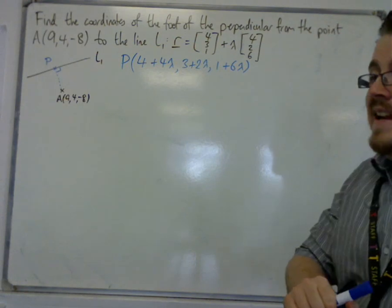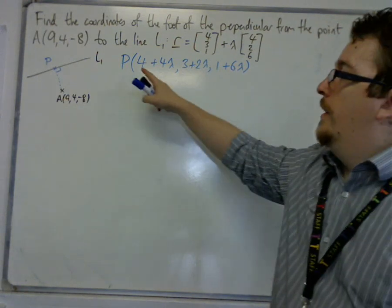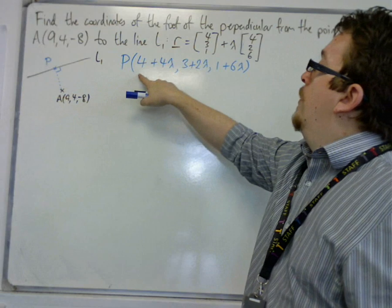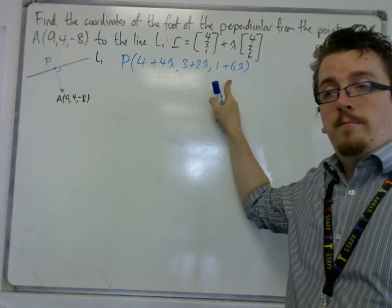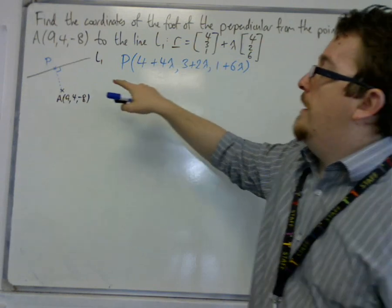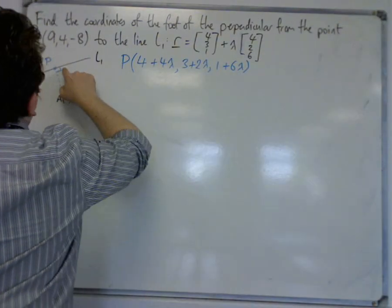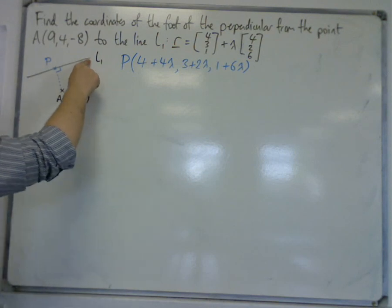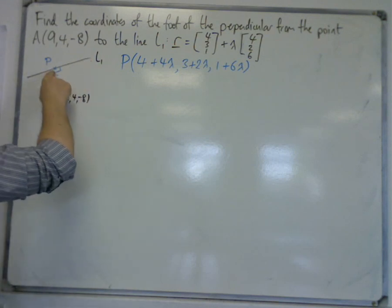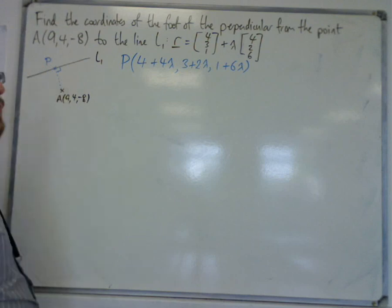So any coordinate along the line L1 will be governed by these coordinates. It just has different lambdas. So this point might have lambda as 1, that's lambda as 2, that's lambda as 3, that's lambda as 4. And we're just trying to find the value of lambda that gives us that specific point.